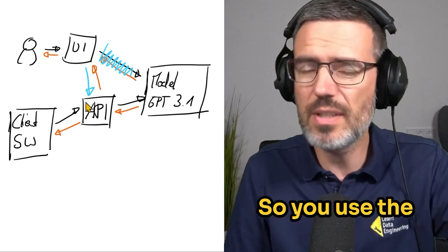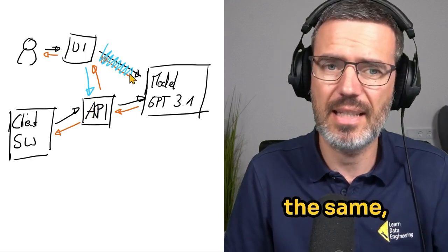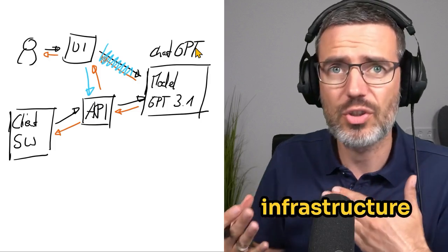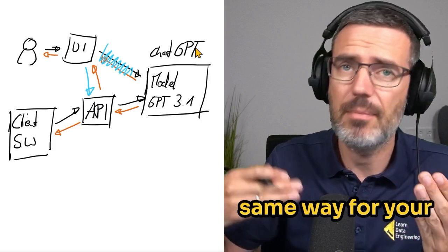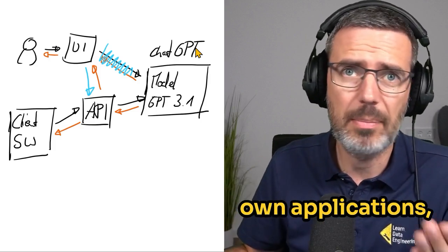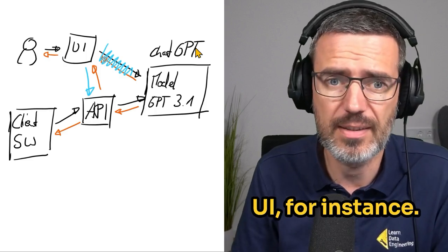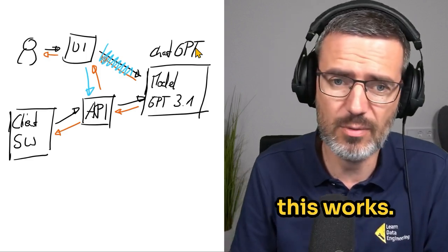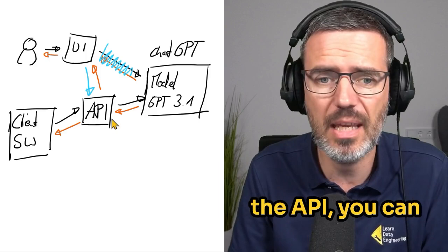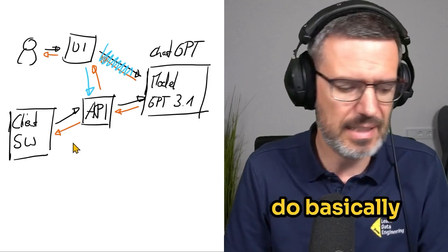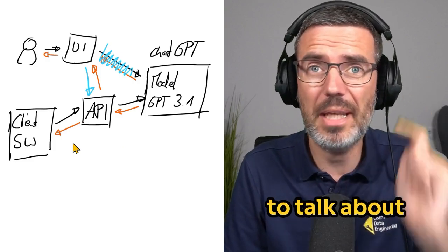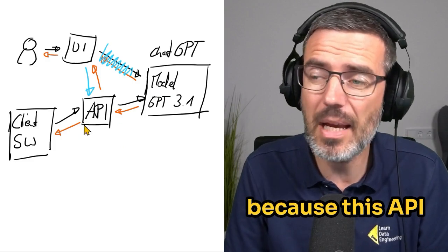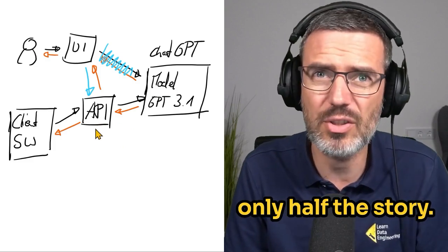So you use the same structure, the same infrastructure that you use for the clients as a microservice, the same way for your own applications, for your own UI, for instance. So this is how this works, and keep this in mind. Once you have the API, you can do basically anything with it. So I hope you learned something, and next we're going to talk about API gateways, because this API part here, this is only half the story.